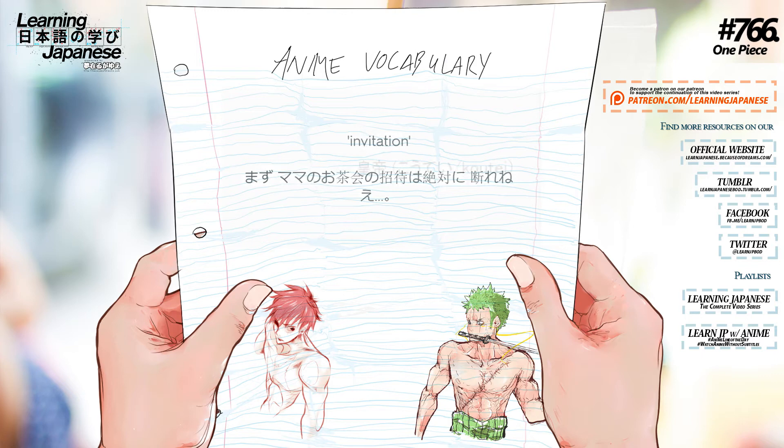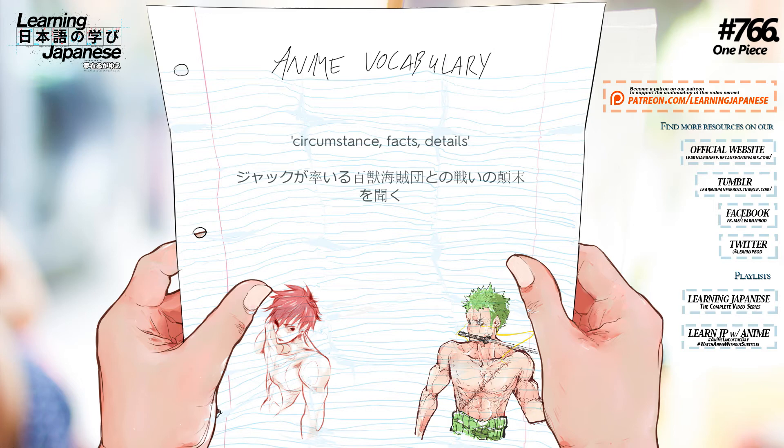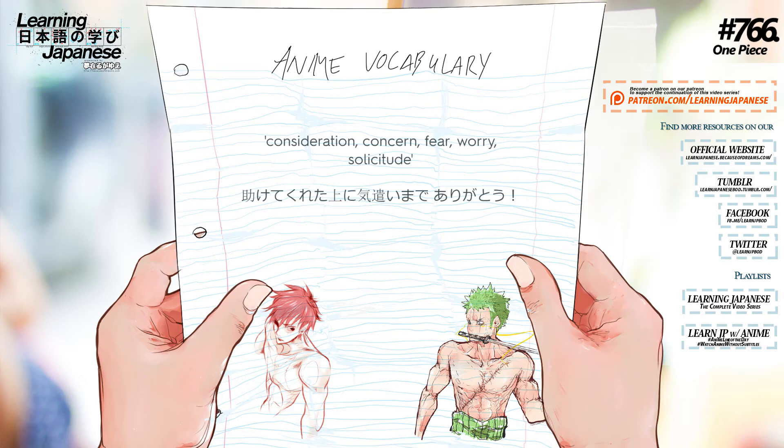Koutei — Emperor. Koubun — Henchman. Follower. Adopted child. Tenmatsu — Circumstance. Facts. Details. Kizukai — Consideration. Concern. Fear. Worry. Solicitude.